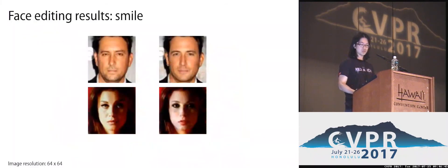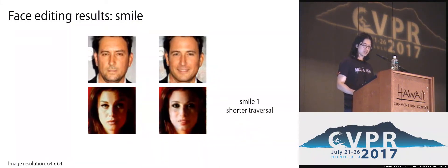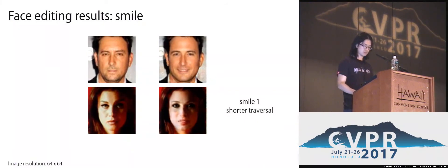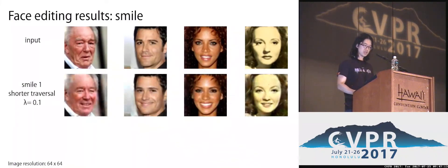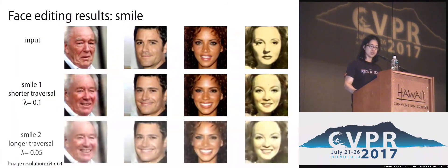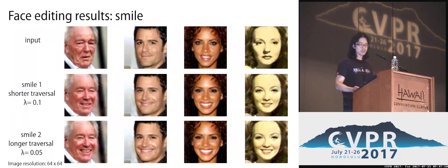Let's look at results where we fix the lighting but manipulate the normals and textures. For our smile example, our network generates natural changes of geometry and texture to achieve smiles of various intensities. The length of the traversal is proportional to the intensity of the editing change, and we can control this with a single regularization parameter lambda.